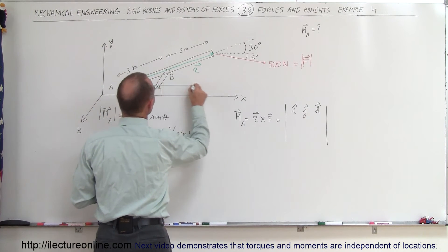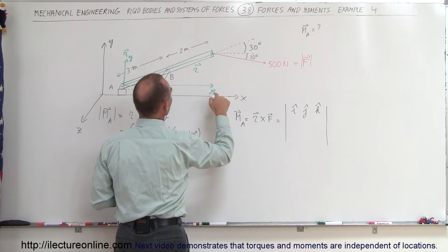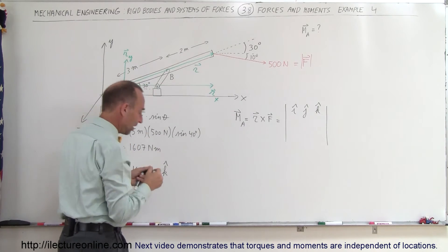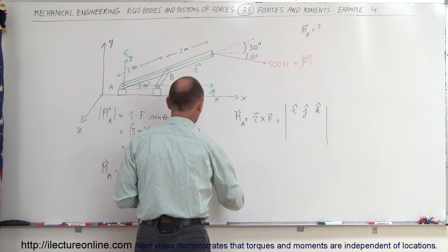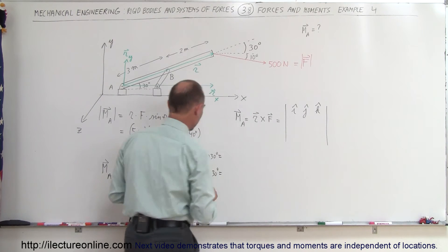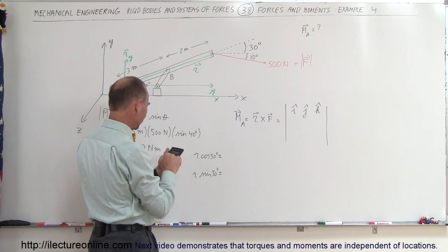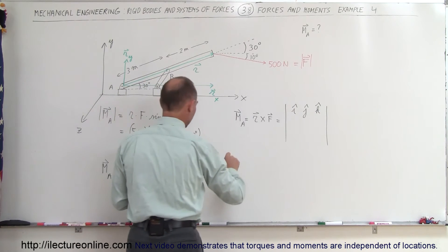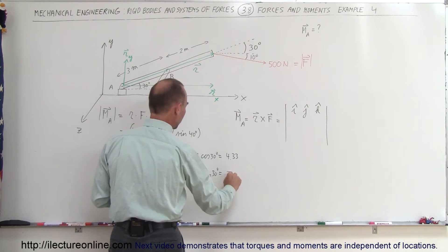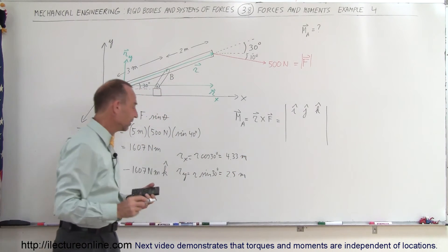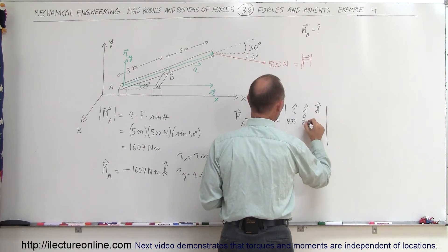For the position vector, we have R in the X direction and R in the Y direction. R in the X direction will be R times the cosine of 30 degrees, and R in the Y direction will be R times the sine of 30 degrees. R is 5, and the cosine of 30 is 0.866, so 5 times 0.866 equals 4.33. The sine of 30 is one-half, so that's 2.5 meters. There's an X and Y component but no Z component for R, so we write down 4.33, 2.5, and 0.